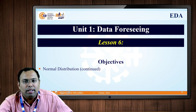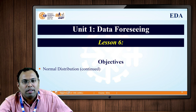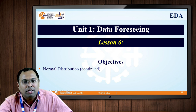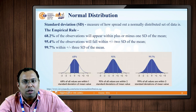This is Lesson 6, Unit 1. The objective of this particular lesson is to cover the remaining points related to the concept of normal distribution. In the last lesson we covered the introduction of normal distribution and some stats concepts related to it, such as mean, median, and mode. Now let us go ahead and see the next concept related to normal distribution.